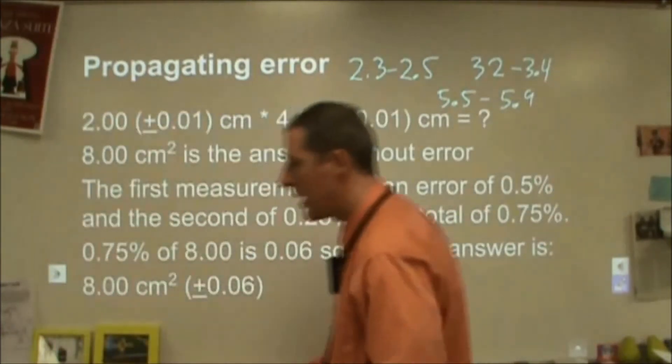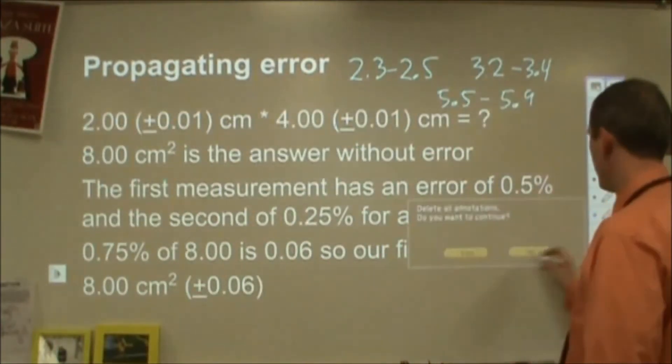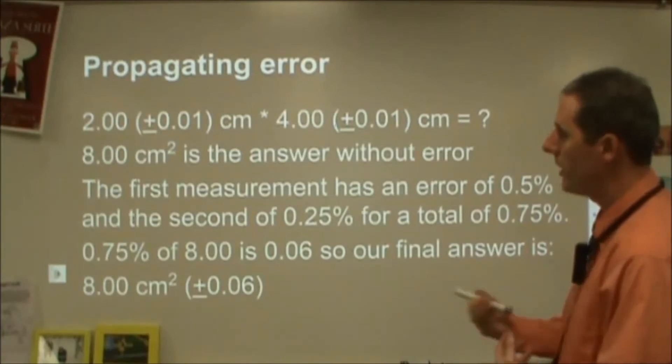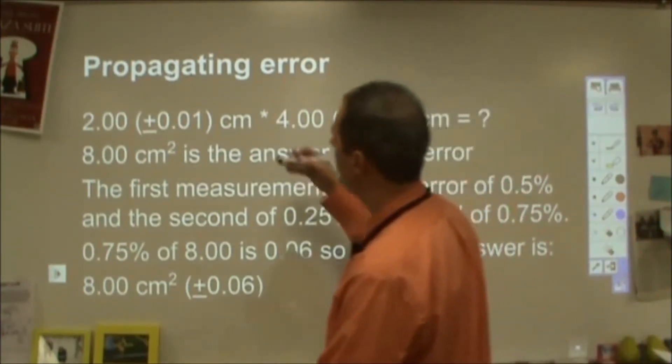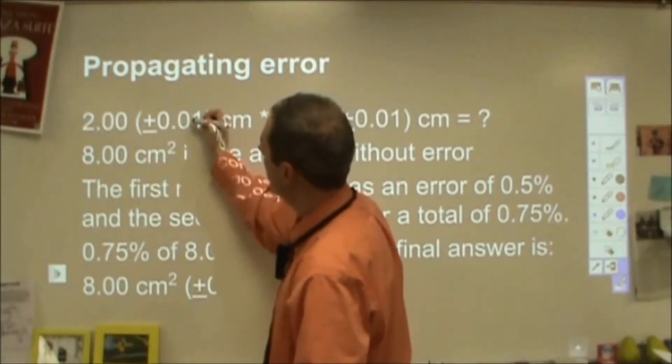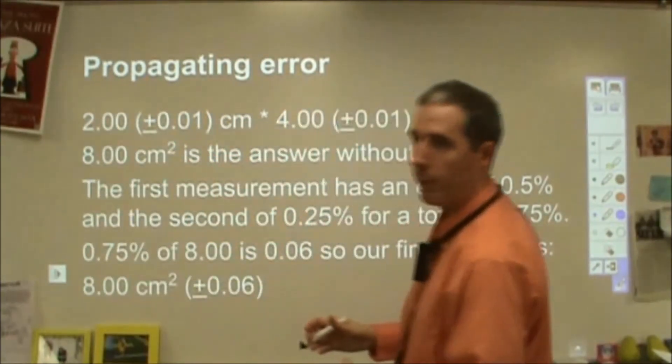Now multiplying and dividing is not quite as simple. So multiplying and dividing, we need to keep our ranges honest. And the way you do that is you compare the error with the value in terms of a percentage.